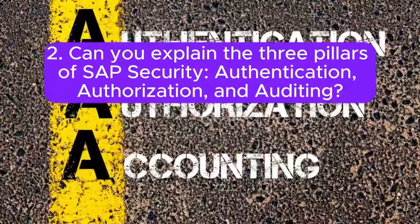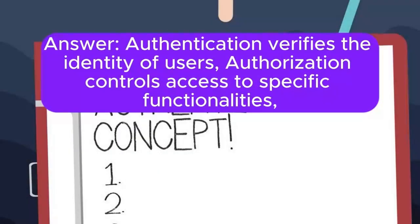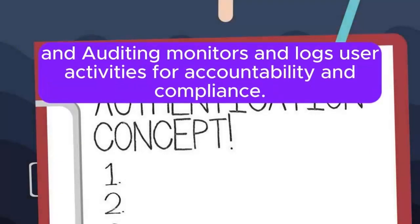Question 2: Can you explain the three pillars of SAP security — authentication, authorization, and auditing? Answer: Authentication verifies the identity of users, authorization controls access to specific functionalities, and auditing monitors and logs user activities for accountability and compliance.